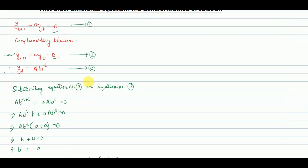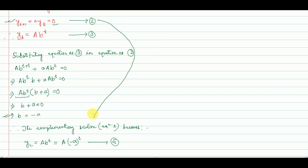Now substituting equation 3 into equation 2 we get A·b^(t+1) + a·A·b^t = 0. Taking A·b^t as common we get A·b^t·(b + a) = 0, which gives b + a = 0, so b = −a. Now the complementary solution of equation 2 becomes yc = A·(−a)^t. Here yc means the complementary solution of y; c is used as a symbol for the complementary solution.